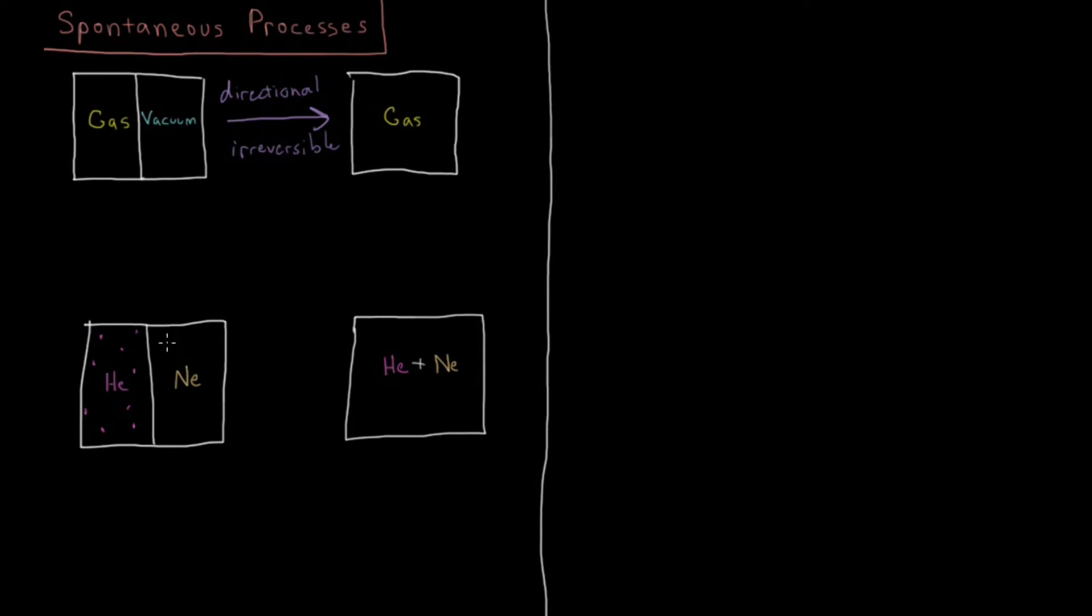And then on the right side we have neon only. And there's a bunch of neon atoms, particles moving around back and forth. And then if we have the partition removed we know that these two are going to mix. So the helium is going to expand and take up the whole container and its particles will be spread throughout the entire container.